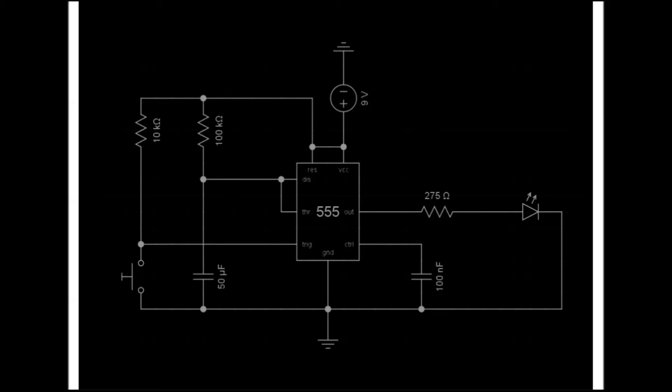The time in which the output signal stays high is calculated by using the following formula. Time equals 1.1 multiplied by R1 multiplied by C1. So time equals 1.1 multiplied by 100,000 ohms multiplied by 0.00005 farads. So time equals 5.5 seconds.